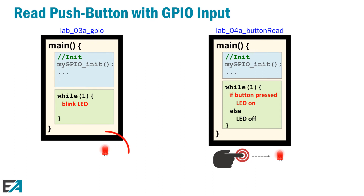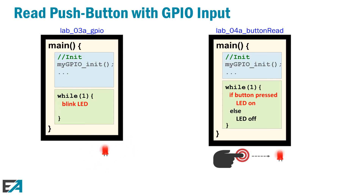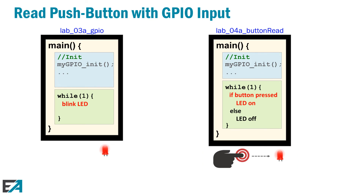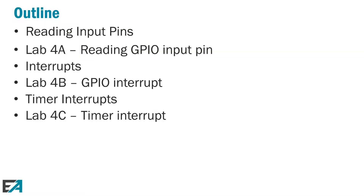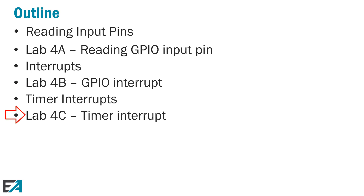As a recap: in the last chapter we just blinked an LED. In this chapter, in Lab 4A, we're going to read the button or switch on the board — in the while loop, if the button is pressed we turn the LED on, otherwise we turn it off. Then we'll cover reading input pins and configuring GPIO. After that, we'll talk about interrupts and do a lab where we respond to an interrupt when you push the button. Finally, we'll cover timer interrupts in Lab 4C, where we respond to a timer interrupt.